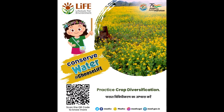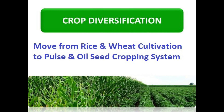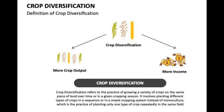Practice Crop Diversification — move from rice and wheat cultivation to pulse and oilseed cropping systems. Crop diversification refers to the practice of growing a variety of crops on the same piece of land over time or in a given cropping season. It involves planting different types of crops in a sequence or in a mixed cropping system, instead of monoculture, which is the practice of planting only one type of crop repeatedly in the same field.